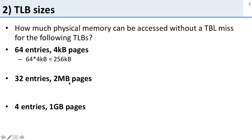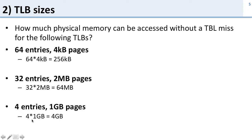If we go to two megabyte pages but cut our TLB size in half to 32 entries, we can access 64 megabytes. And with one gigabyte pages and only four entries we can access four gigabytes of memory. So much larger pages, even with many fewer entries, mean we can access a lot more data.